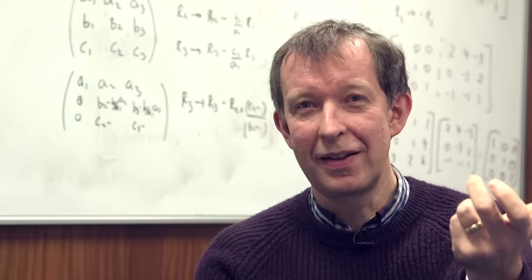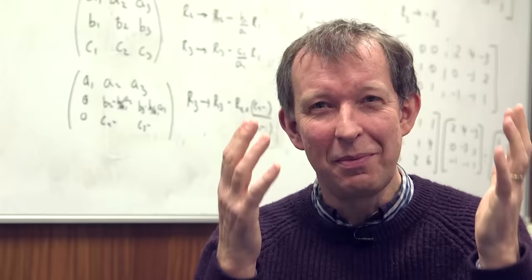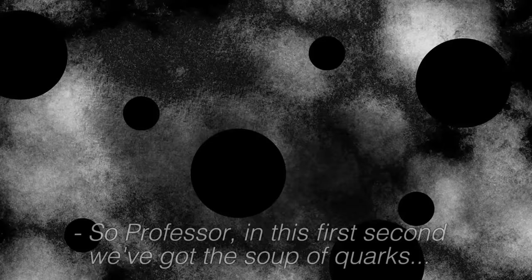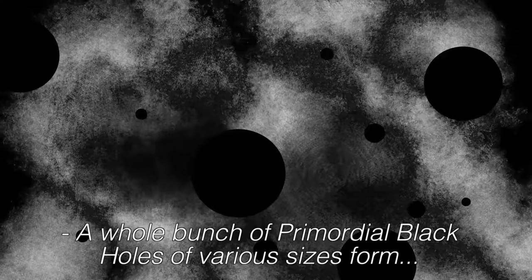This is amazing, right? We're going to be using observations today to constrain a physics event that could have occurred way before the first second. So in this first second we've got the soup of quarks, a whole bunch of primordial black holes of various sizes form. What happens next?